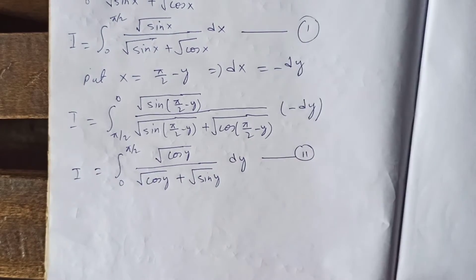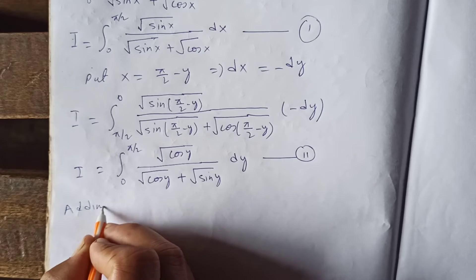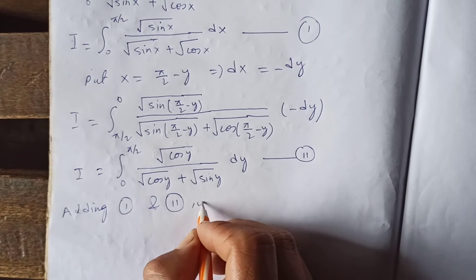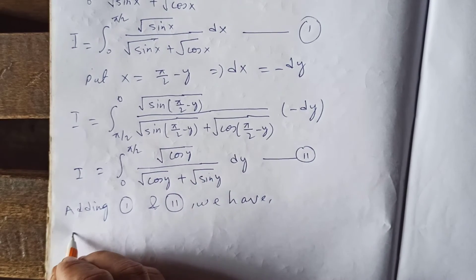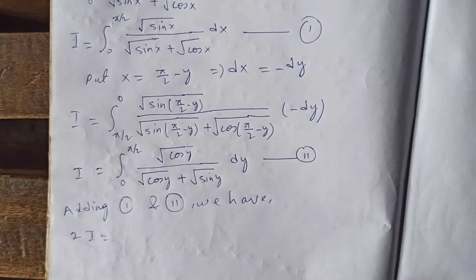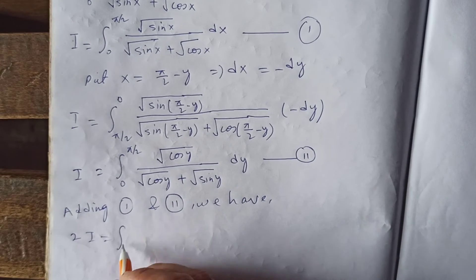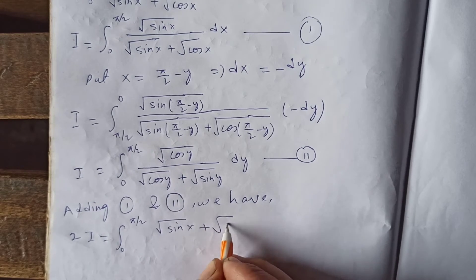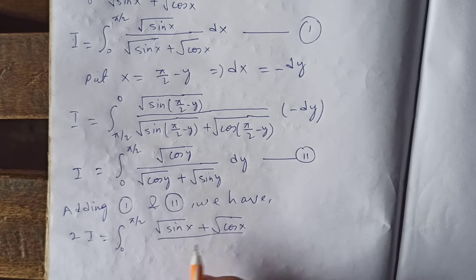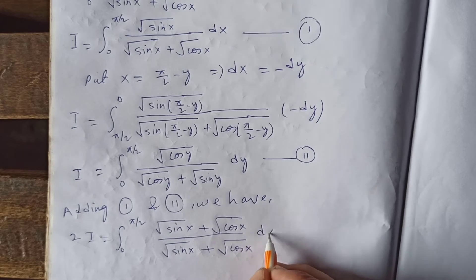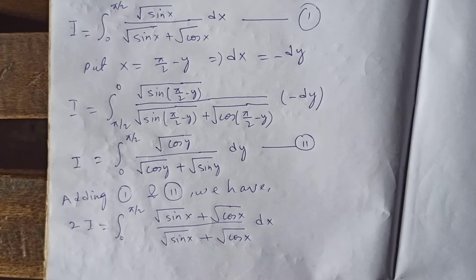Now we add equation 1 and equation 2. Adding them, 2I equals the integral from 0 to π/2 of (√(sin x) + √(cos x)) divided by (√(sin x) + √(cos x)) dx — because in a definite integral, changing the dummy variable from y to x does not change the value.